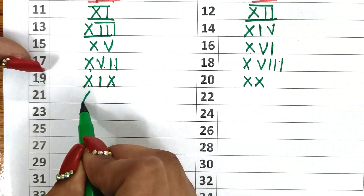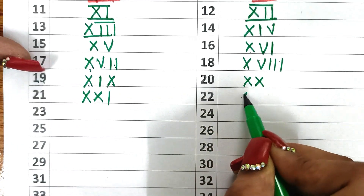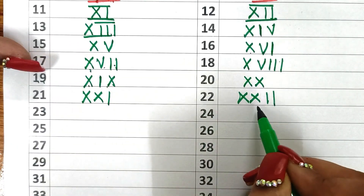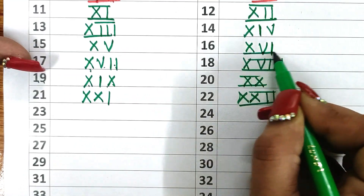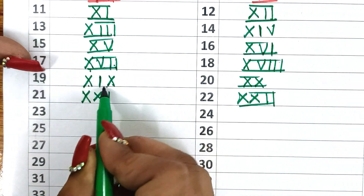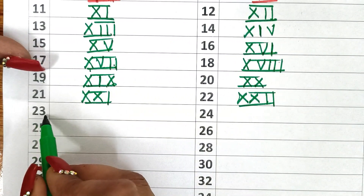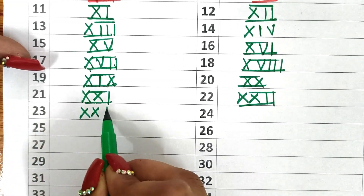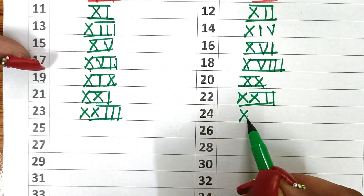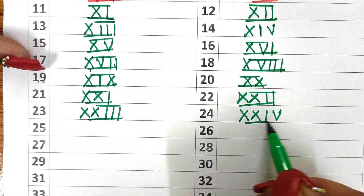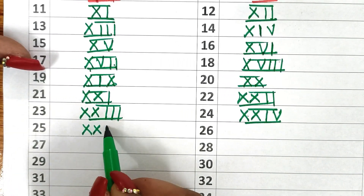Now it's 21. So first 20 and then 1 — XXI. Then 22 is 20 and then 2 — XXII. I hope this is clear. Now next is 23, so first write 20 then write 3 — XXIII. Then 24: first write 20 and then write 4, which is 5 minus 1 — XXIV. Now 25: 20 and then 5 — XXV.